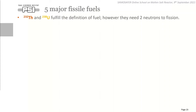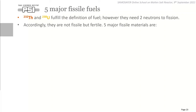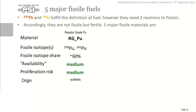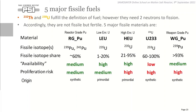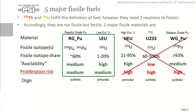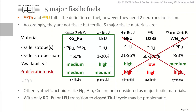In Russia, MOX fuel is recycled directly in fast reactors and they foresee molten salt reactor as a dedicated minor actinide burner. In India, a special scenario starts from natural uranium generating MOX, using it in a fast reactor to irradiate thorium, and using the generated uranium-233 as fuel for a heavy water reactor. In China, more or less everything is being evaluated. There are five major fissile fuels: reactor-grade plutonium with medium availability and medium proliferation risk, and low-enriched uranium with high availability and medium proliferation risk.